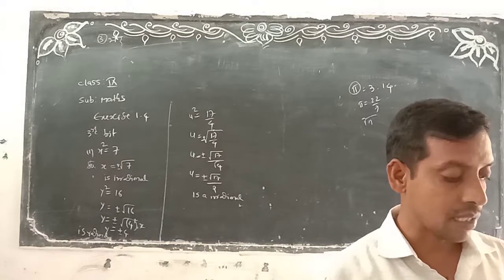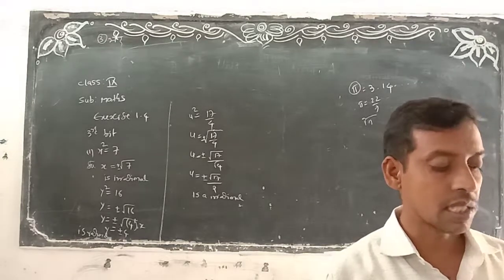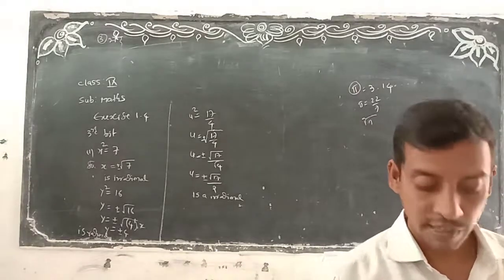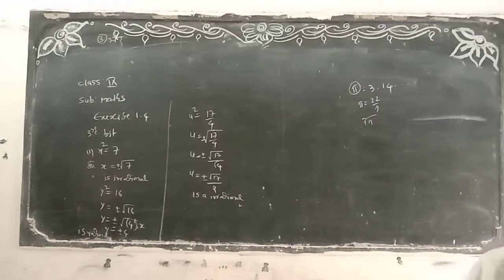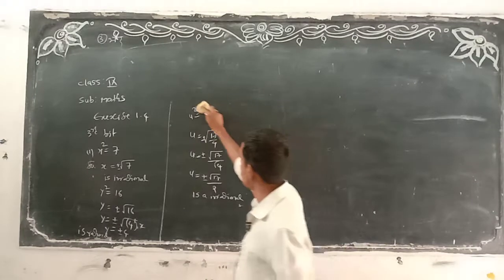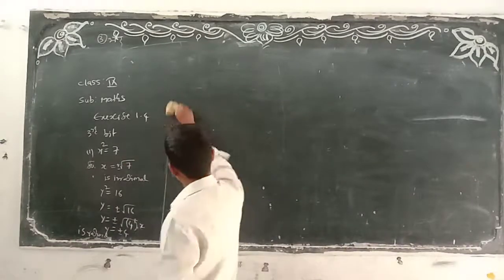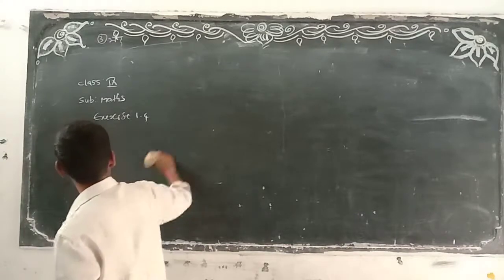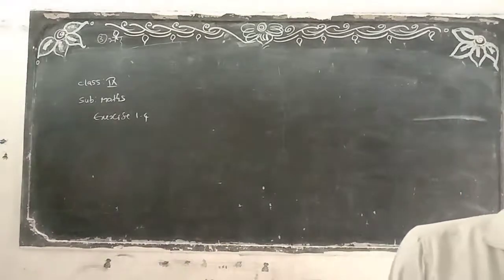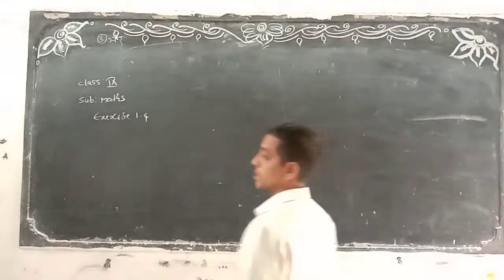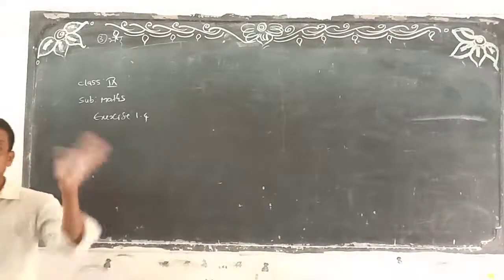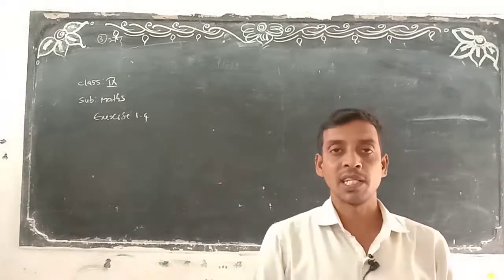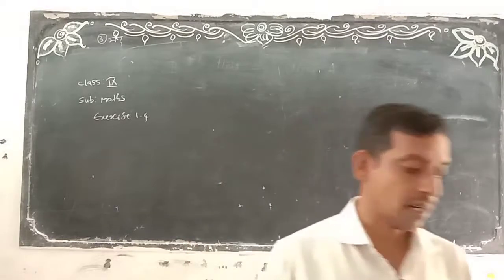Now coming to the 5th and 6th problems — these are a different type of problem. Rationalize the denominator. Rationalizing factor means: suppose you have a plus sign, if you write minus instead, that is called rationalizing. Suppose plus is there, we write minus. That is the rationalizing factor.